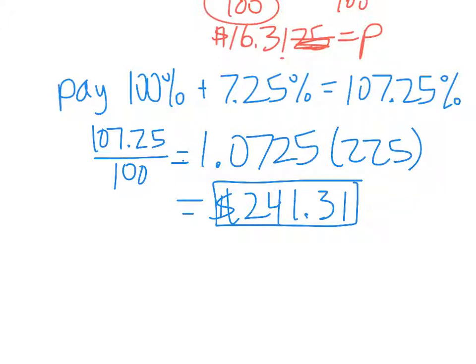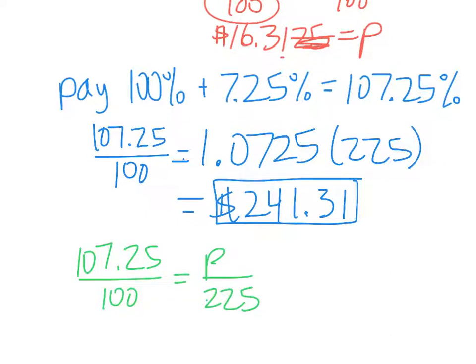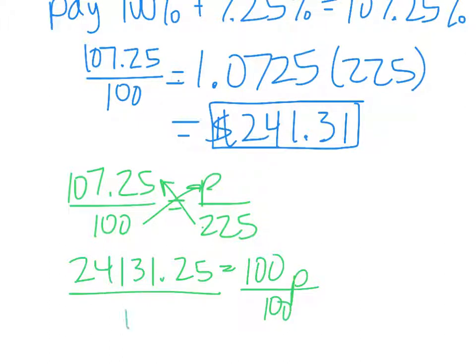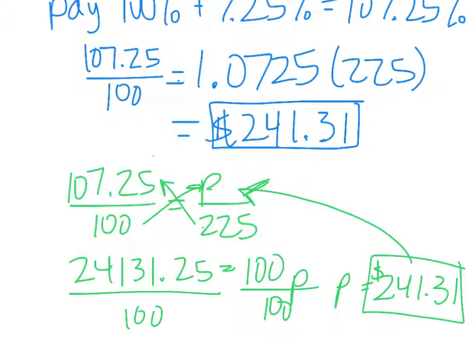Or, again, I could put just the 107.25 over 100 equals part over whole, and the whole again is 225. When we cross-multiply here, we get 24131.25 equals 100p, and then divide both sides by 100. Again, our part is bigger than our whole. Two, four, one, point, three, one, if we round it. It's just unusual for our part to be bigger than our whole, except for when we multiply by over 100.